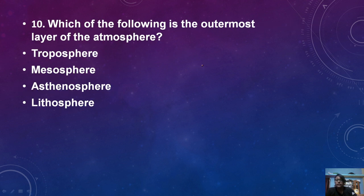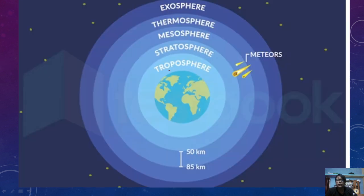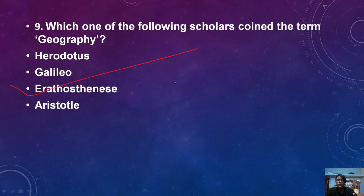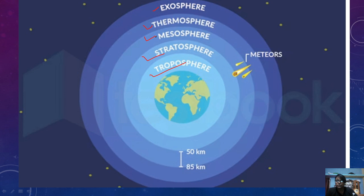What is the outermost layer of the atmosphere? The options are troposphere, mesosphere, asthenosphere, and lithosphere. The layers of the atmosphere from bottom to top are: troposphere, stratosphere, mesosphere, thermosphere, and exosphere. The correct answer is exosphere, which is the outermost layer.